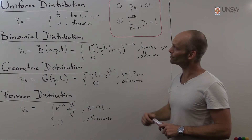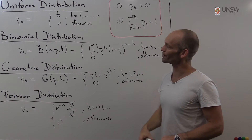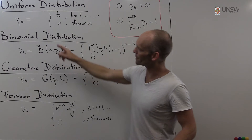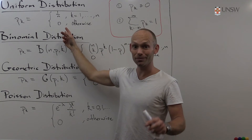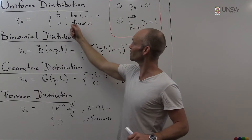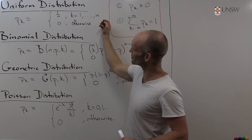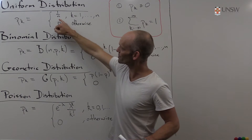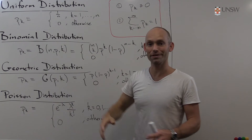Let's begin with the uniform distribution, which is really simple. It's zero everywhere except in n points — 1, 2, 3 up to n — where it has the constant value 1 over n.